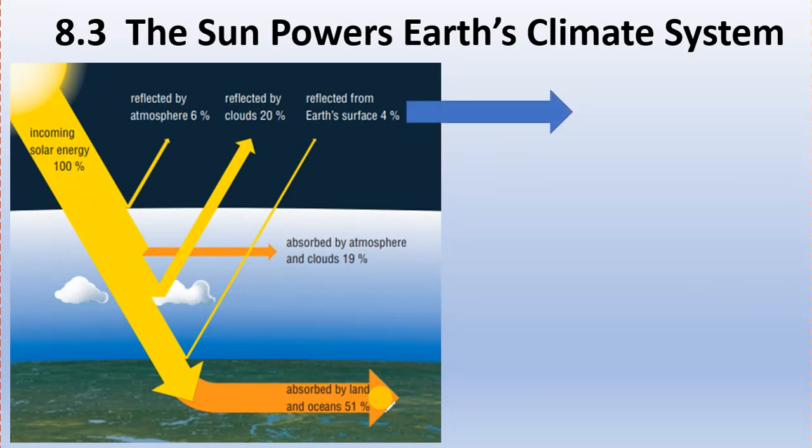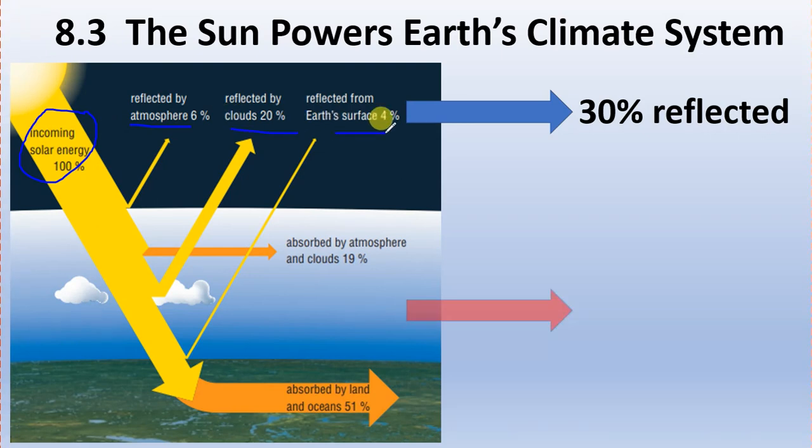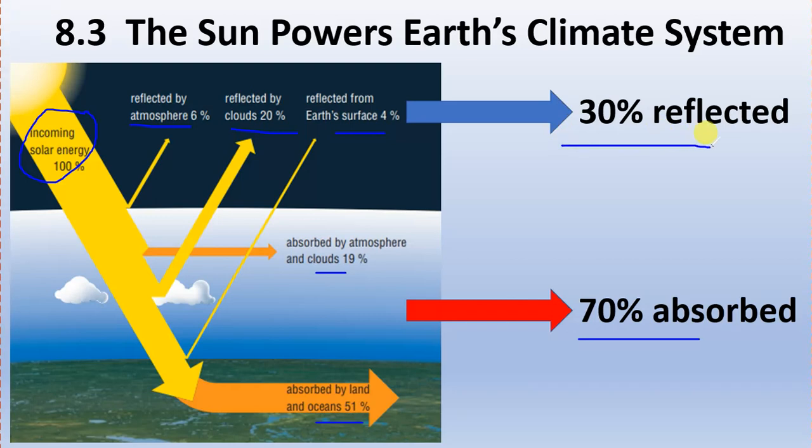30% of the incoming energy gets reflected, and there's the breakdown of that 30%. The clouds and atmosphere are absorbing 19%, and the land and water is absorbing 51% to make 70%. So 30 and 70 are your key numbers that you should remember for this section.